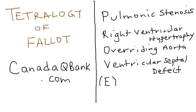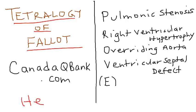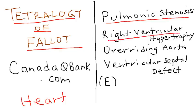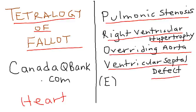Tetralogy of Fallot is the topic for this video. Tetralogy refers to four things that happen in the heart. The four things are: pulmonic stenosis, right ventricular hypertrophy, overriding aorta, and ventricular septal defect. There's a mnemonic here: PROVE.